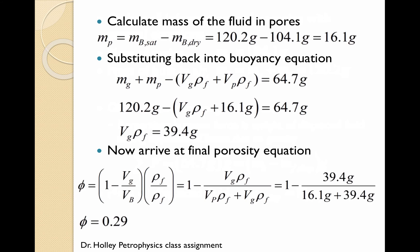We now calculate the mass of the fluid in the pores by taking the mass of the saturated core minus the mass of the dry core, giving us a mass of 16.1 grams. Substituting these values back into the general buoyancy equation, we have the mass of the grain plus the mass of the fluid in the pores minus the weight of the displaced fluid, which is the volume of the grains plus the volume of the pores times the density of the fluid. This is set equal to the mass of the submerged core at 64.7 grams.